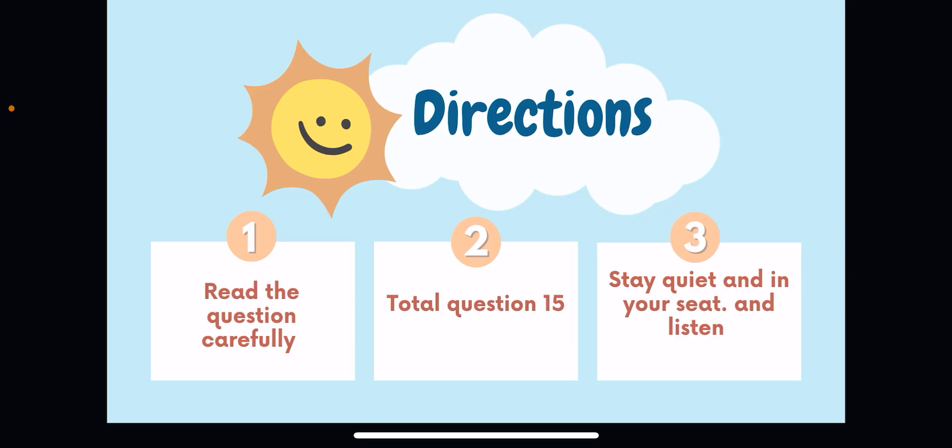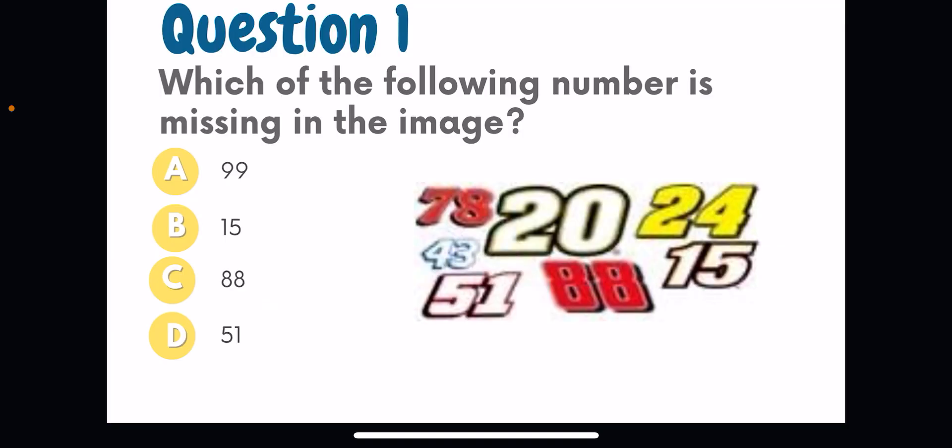Going on to the directions: first, you need to check how many questions are there in the question paper. Parents, make sure you tell your kids to first check how many questions there are. When filling in the name and other details, make sure it is filled properly, or take the help of a teacher. Also, make sure you read the questions properly and select the correct option. If someone is reading for you, please listen carefully.